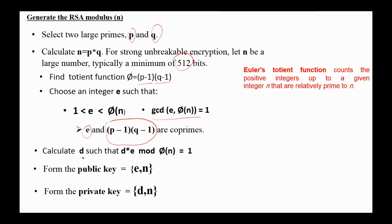Next, we calculate d such that d times e mod phi equals to 1. Now e and n form the public key, d and n form the private key.